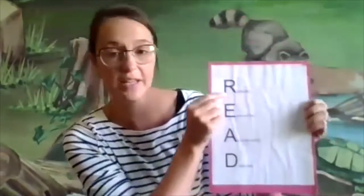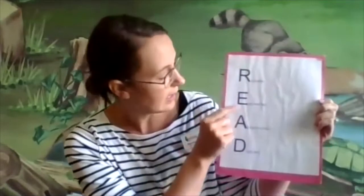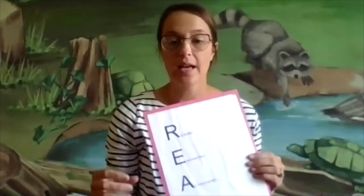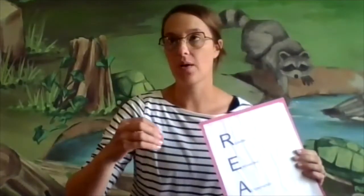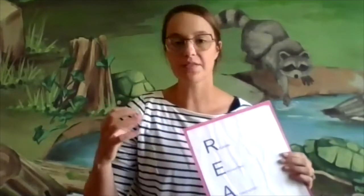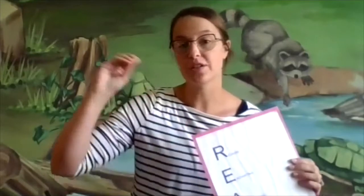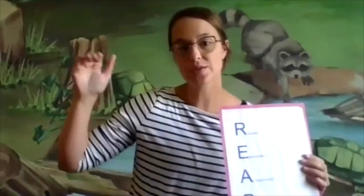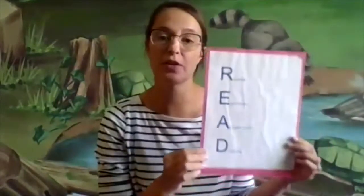For the letter R in READ, I wrote "relaxing," E is "enchanting," A is "action-packed," and D is "dazzling." Acrostic poems are really fun — you can create a phrase or just choose one word. A lot of times we do it with our names. So for Stephanie, I would pick something that represents me as a person for each letter. For S, I might choose "super," and for T, I would say "talkative" — I love to talk. You select words that describe the main word or phrase you're using.